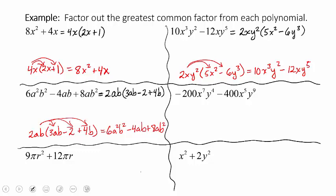Don't be intimidated by the big numbers. We have −200x⁷y⁴ minus 400x⁵y⁹. Among the numbers, negative 200 and negative 400 — I want to factor out that negative, so I'll factor out negative 200. Does 200 go into 400 evenly? Yes. Now the variables: both have x's — x to the 7th and x to the 5th, so x⁵ is common to both. For y: y to the 4th and y to the 9th, so y⁴ is common to both. Our GCF is −200x⁵y⁴.